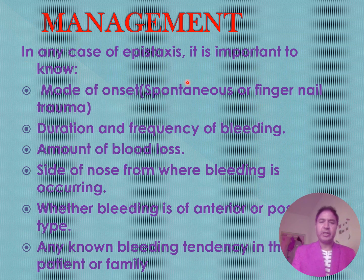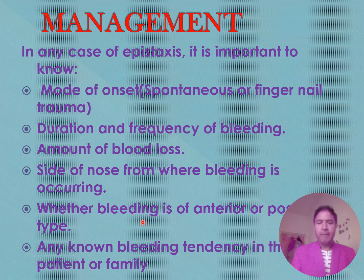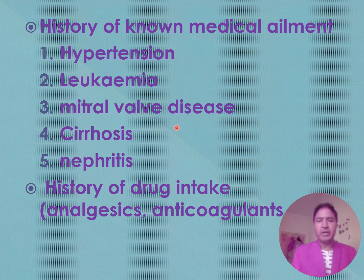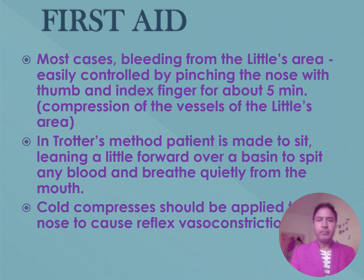In management, it is important to know the mode of onset — spontaneous or due to fingernail trauma — duration and frequency of bleeding, amount of blood loss, side of nose involved, and whether bleeding is anterior or posterior. Any known bleeding tendency in the patient or family should be noted, as well as history of medical ailments such as hypertension, leukemia, mitral valve disease, cirrhosis, or nephritis, and history of drug intake including analgesics and anticoagulants.